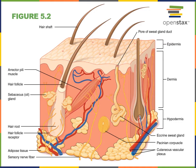Another major function of the integumentary system is metabolism. There are special chemical reactions performed only in the cutaneous membrane. For example, the synthesis of vitamin D requires a step that occurs in the cutaneous membrane in the presence of ultraviolet light.